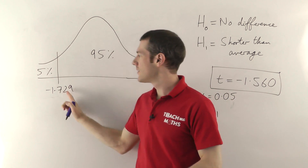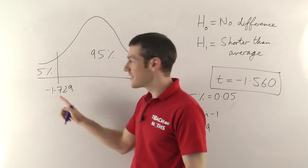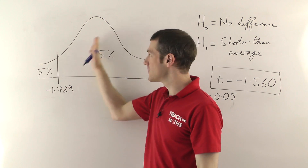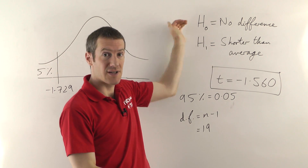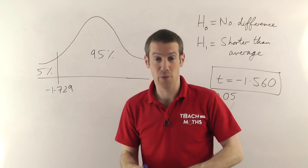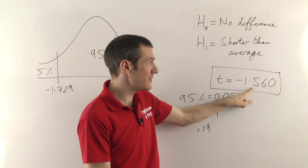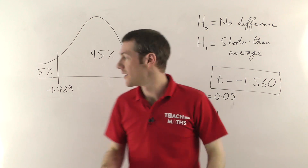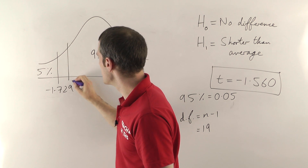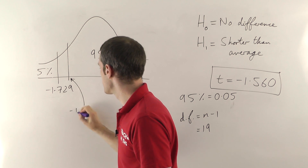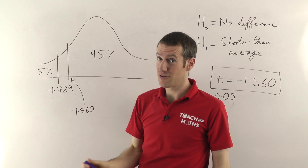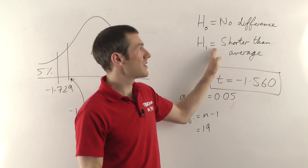Now for the important comparison: we compare our t-value with the critical value. Any t-value less than minus 1.729 would put you in that 5 percent region, meaning you can reject your null hypothesis. That would mean a significant difference between your players' mean height and the population mean. But our t-value is only minus 1.560 — and since more-negative values move further into the tail, minus 1.560 is not more negative than minus 1.729, so it does not cross the critical threshold.